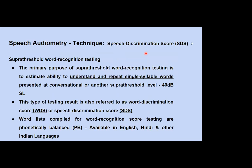Another important technique is the Speech Discrimination Score, abbreviated as SDS. It is a supra-threshold measure. The person is required to repeat words from a PB word list — a monosyllabic, phonetically balanced word list available in various languages including all Indian languages.